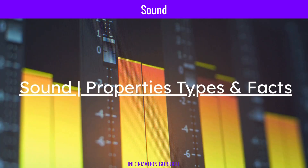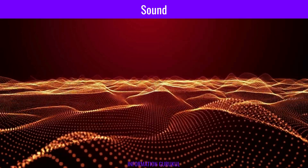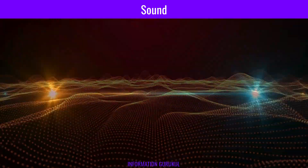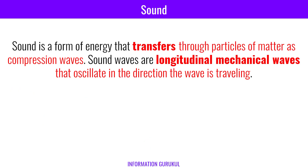Today's topic is sound. Sound is a mechanical disturbance from a state of equilibrium that propagates through an elastic material medium. Question number one: Sound is a type of mechanical wave. Sound is a form of energy that transfers through particles of matter as compression waves. Sound waves are longitudinal mechanical waves that oscillate in the direction the wave is traveling.